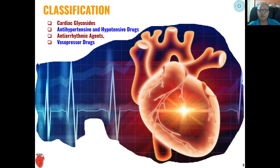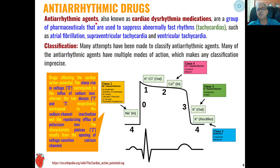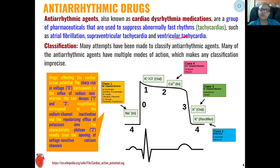In the present lecture we will discuss anti-arrhythmic agents, which are also known as cardiac dysrhythmia medications. They are a group of pharmaceuticals used to suppress abnormally fast rhythms — in medical terms this is called tachycardia. These agents can be used for atrial fibrillation, supraventricular tachycardia, and ventricular tachycardia.